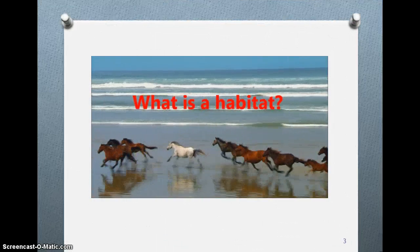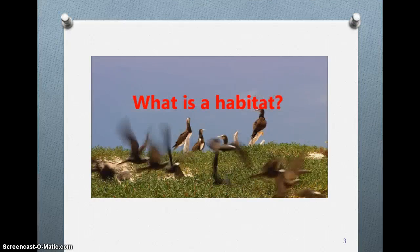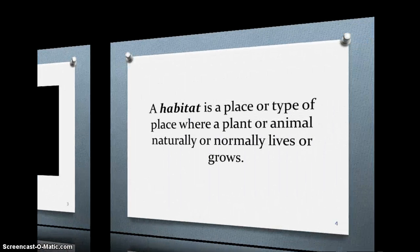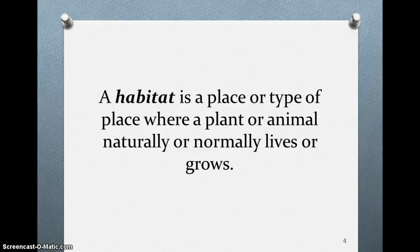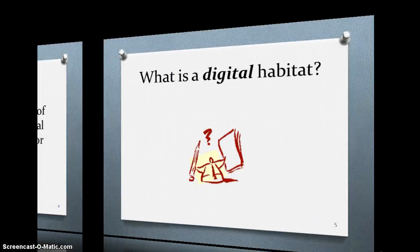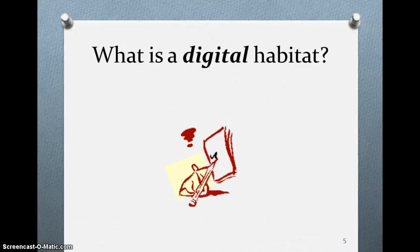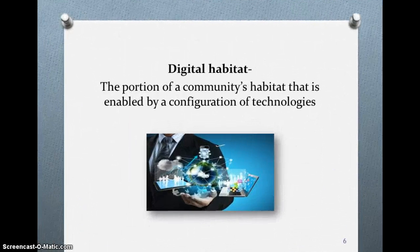What is a habitat? This is what we know to be a habitat with animals. A habitat is a place or type of place where a plant or animal naturally or normally lives or grows. Now, let's look at that from a digital perspective. What is a digital habitat? In digital habitats, the portion of the community's habitat is enabled by a configuration of technologies. Try to look at your day and how technology is involved in the things that you do every day, and how each thing is intertwined to help make everything work together. That is the main idea here.